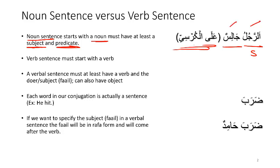After that, we can have additional information, such as 'the man is sitting on the chair' — Ar-rajulu Jaalison Al-Kursi. A verb sentence or verbal sentence must start with a verb, so we will always have a verb at the beginning. The verbal sentence must at least have a verb and the doer.